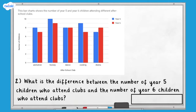Question two: what is the difference between the number of year five children who attend clubs and the number of year six children who attend clubs? This question isn't asking about a specific club, so we need to work out the information for each club first and then use this to answer the question. We can annotate or write on the chart as we go so that we're not trying to hold too much information in our heads. Let's look at the blue bars first. Eight year five children attend animation club, so we can write eight on that bar.